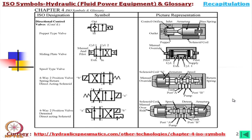First of all, we will recapitulate some symbols. This is a poppet-type check valve, but it is pilot operated so that we can make the line flow through. Normally oil is coming from one side and cannot go the other side, but we can move this poppet to allow flow in that direction. In this case, it is solenoid operated — if we move it, oil will flow through.